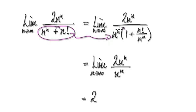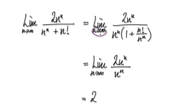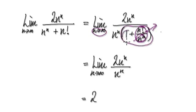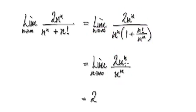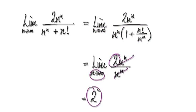From here, factor out n to the power of n and that gives you this. As n tends to infinity, n factorial over n to the power of n will head towards zero, because n to the power of n is much bigger. So this term will be one. Tidying this up, that will give you this, and then as n tends to infinity, that gives you two. So the limit is two.